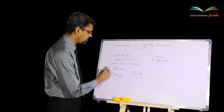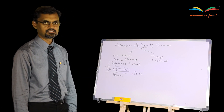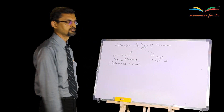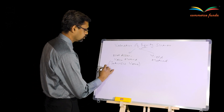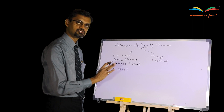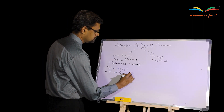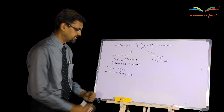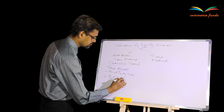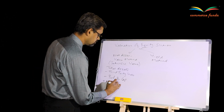The number of equity shares will be given in the question. To calculate the net assets value belonging to the equity shareholders, visualize the balance sheet. It is: total assets — and when I say total assets, don't consider fictitious assets — minus all third-party liabilities. And since we are talking about equity shares, if there is preference share capital also, you have to reduce that too. What remains is your net asset value for equity shareholders.